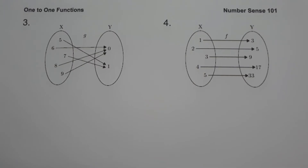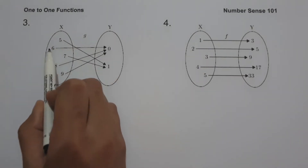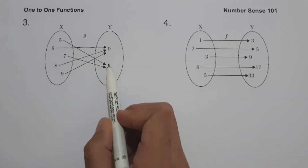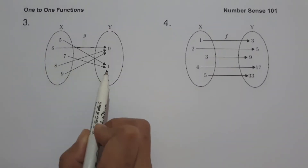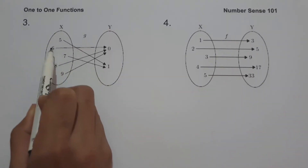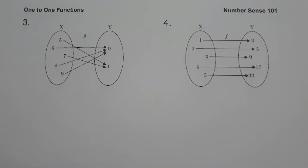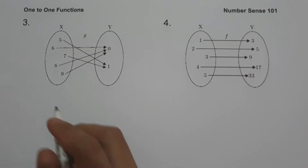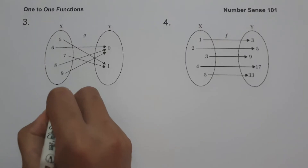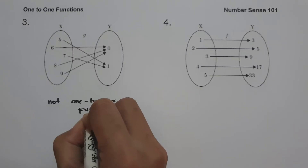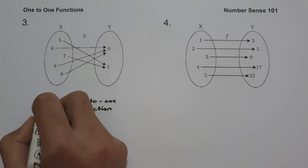On example number three, we have a mapping diagram. The values of x are 5, 6, 7, 8, and 9, and the values of y are 0 and 1. Five and seven are paired with 1, while six, eight, and nine are paired with 0. This function is not one-to-one because the same y value is paired with different x values.